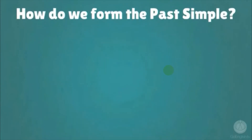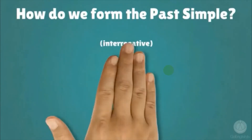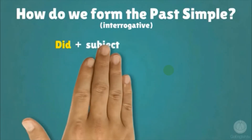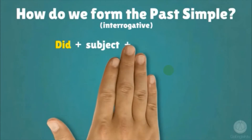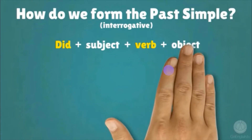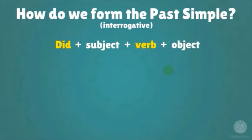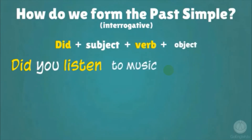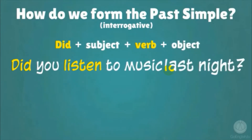How do we form the past simple interrogative? Did plus subject plus verb plus object. For example: Did you listen to music last night?